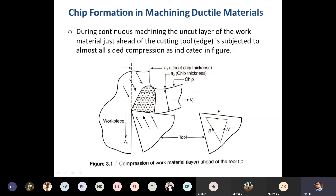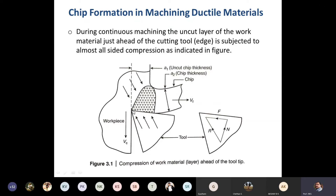When compressive forces act on the layer of the work material, shear stress starts developing in that layer and builds in all directions. Compressive forces result in formation of shear stress in the layer of the work material. When this shear stress reaches or exceeds the shear strength of the material, there will be yielding — if the shear stress reaches or exceeds the shear strength, yielding will result in the formation of a crack.